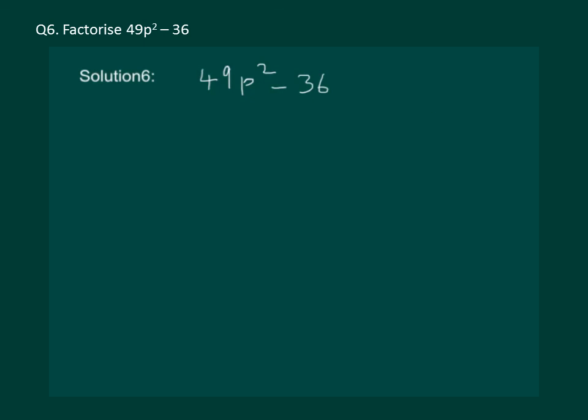Let us read the question on the slide: factorize 49p square minus 36. This can be written as 7p whole square minus 6 whole square. It is easy to identify that we can use a square minus b square is equal to a plus b into a minus b, which is one of our identities.